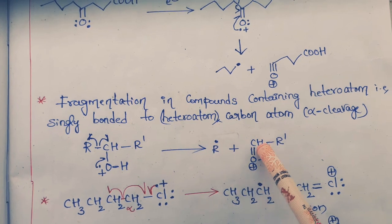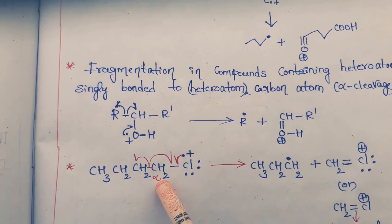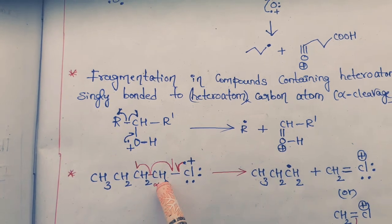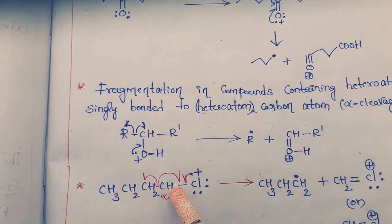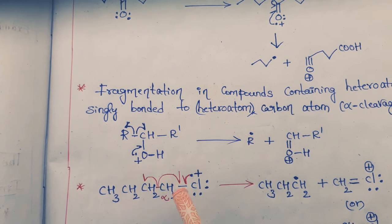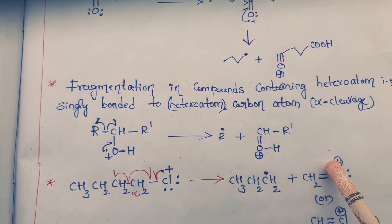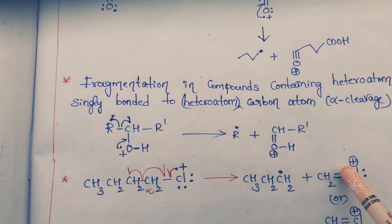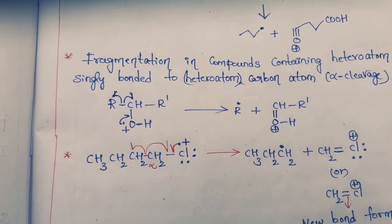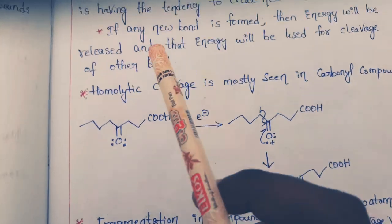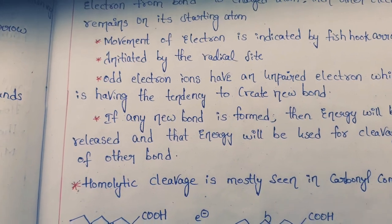In the third example, the homolytic cleavage again starts from the radical side — this is why it is also called alpha cleavage, because the bond at the alpha position is cleaved. The radical shifts to this side; one electron from the single bond shifts toward this side and the other shifts to the other side. These two electrons form a new bond here, the positive charge remains as usual, and a single radical forms on this side. When a new bond is formed, energy is released and used for cleavage of other bonds. This is the homolytic cleavage mechanism.